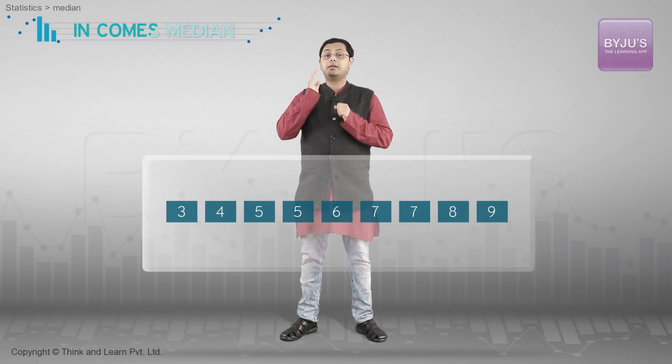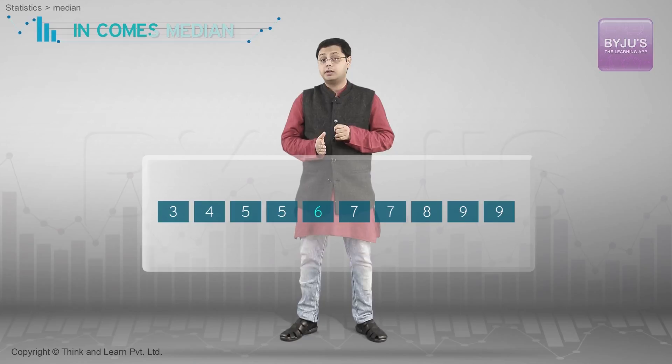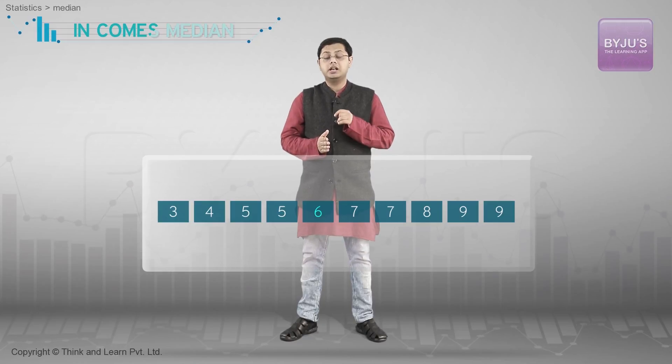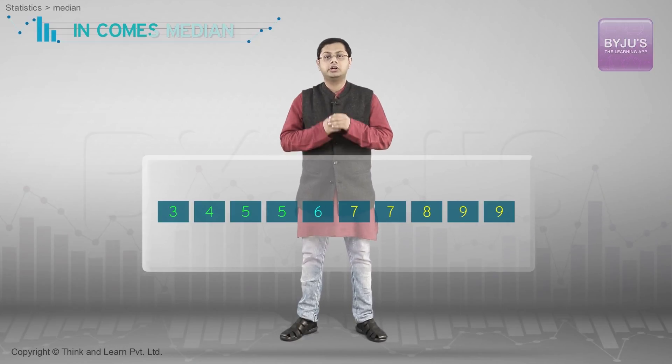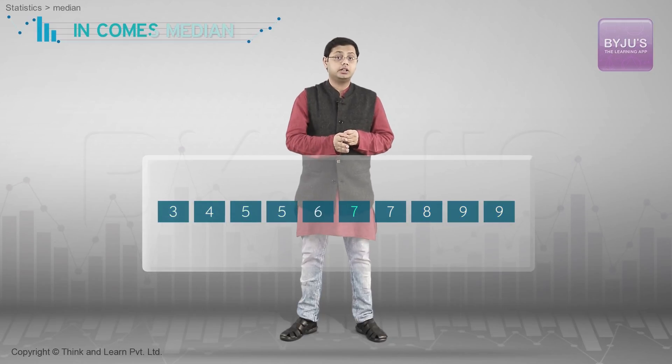Now, let me add one more term to this set — say, another nine. If I pick the fifth term as the median, there are five terms to the right and four terms to its left. Whereas if I pick the sixth term as the median, there are four terms to the right and five terms to its left.